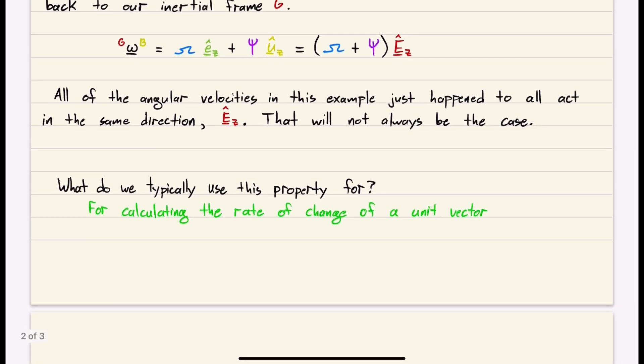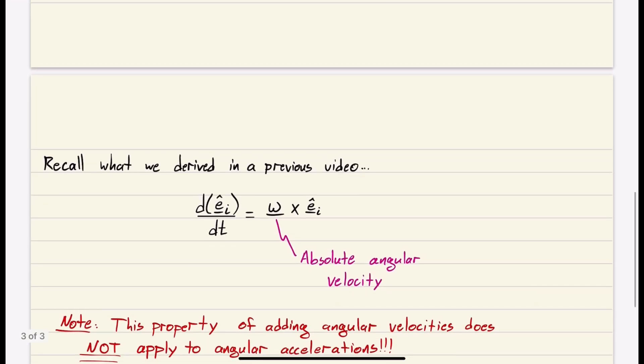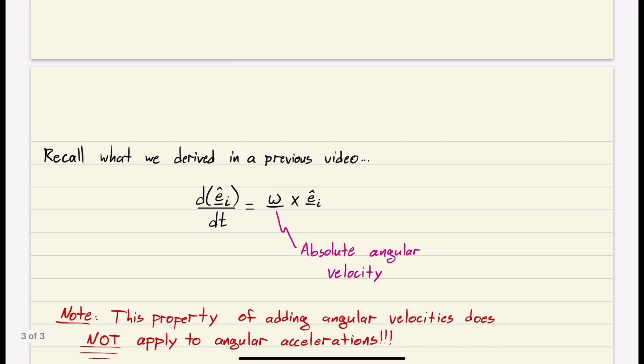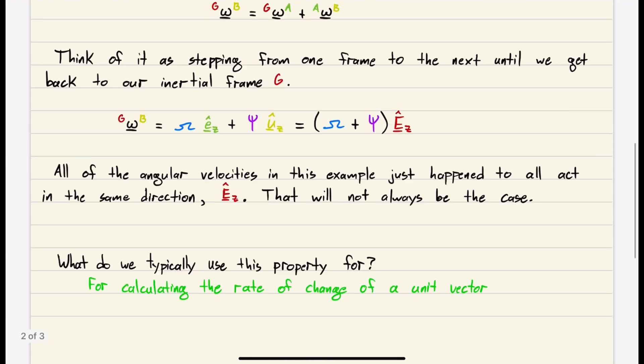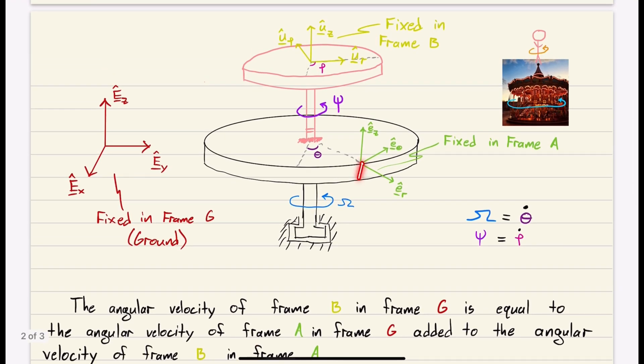What do we typically use this addition theorem for? We use it for calculating the rate of change of a unit vector. Recall from the previous video: the rate of change of a unit vector equals the absolute angular velocity omega crossed with the vector itself. The absolute angular velocity is the velocity with respect to the inertial frame. So the absolute angular velocity of frame A is omega EZ, but for frame B it's phi plus omega EZ.